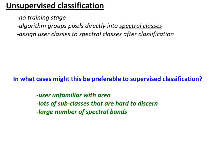So why might we use unsupervised classification? Maybe you're unfamiliar with the area and don't know what the user classes might be. Or maybe there are lots of subclasses that are hard to discern — for example, four types of grass — and you want to capture those as spectral classes and then aggregate them at the end. Or maybe you have a large number of spectral bands and you want to get all the leverage you can from them.